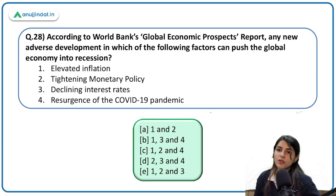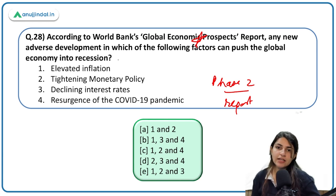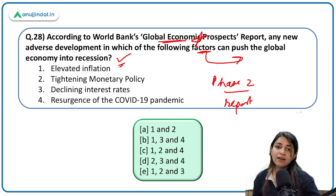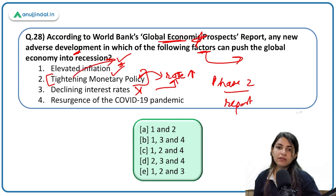According to the World Bank's Global Economic Prospects Report, adverse developments in any of the following factors can push the global economy into recession: elevated inflation — yes; tight monetary policy with high interest rates — correct; declining interest rates — no, it is rising interest rates that can cause recession; resurgence of COVID-19 pandemic — correct. So the first, second, and fourth are correct; the third is incorrect.